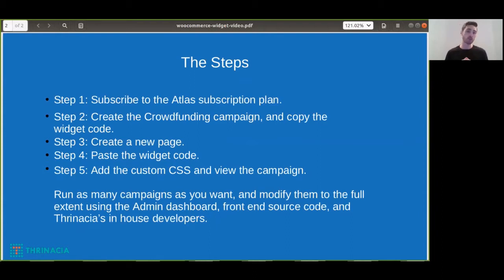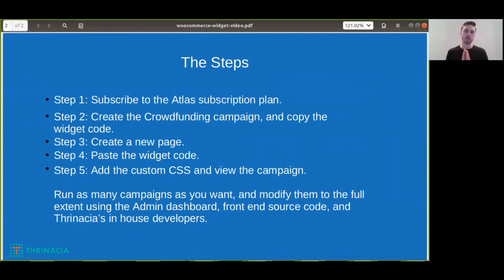Step two: you can create the crowdfunding campaign and then copy the widget code. Create a new page on your existing or new WordPress WooCommerce website, paste the widget code onto that page, publish the page, and then if the campaign is not full width on the page there is some additional CSS you can add onto the page.